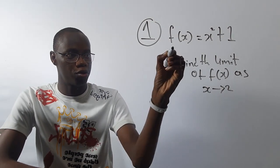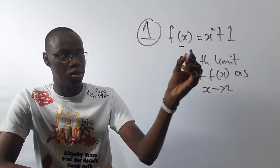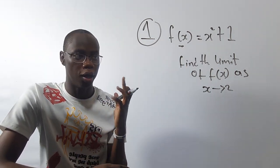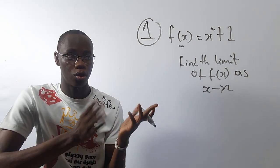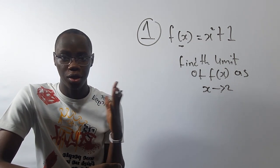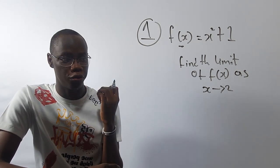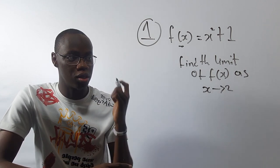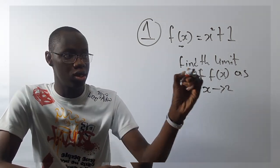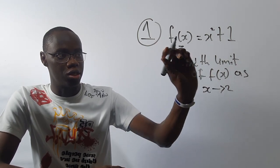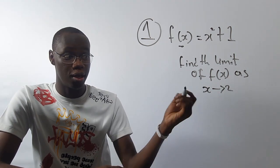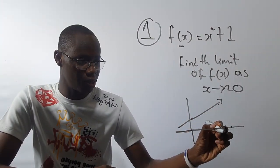Look at this question. f(x) is equal to this function here. This is a very simple question, but the reason people run away from limits or get it wrong is because they don't understand the process. There are about four strategies for finding limits. They are very easy — this is just basic limits — and these are very examinable. It says: find the limit of f(x) as x tends towards 2.